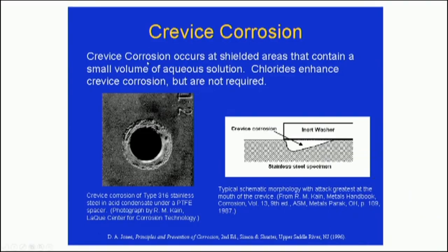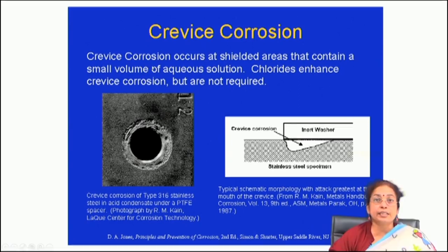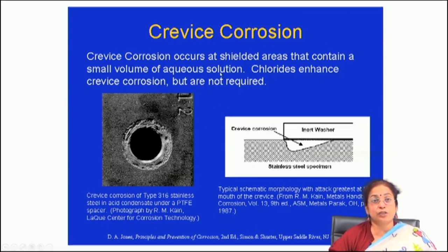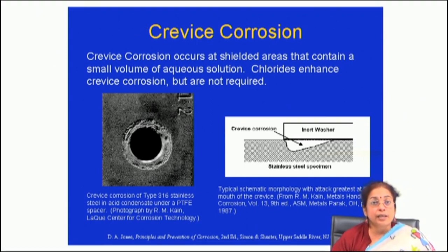The third type of corrosion is crevice corrosion. Crevice corrosion is a kind of corrosion that occurs at shielded areas that contain a small volume of aqueous solution. Usually when there is chloride in the environment it is aggravated, but chloride is not necessary. The corrosion initiation mechanism in crevice corrosion is by galvanic attack.